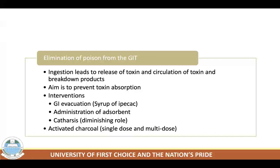Substances not well absorbed by activated charcoal include alcohols (ethanol, isopropyl alcohol, methanol, glycol, acetone), hydrocarbons (petroleum distillates, kerosene), metals and inorganic minerals (arsenic, boric acid, iron, lead, sodium), and corrosive substances (sodium hydroxide, sulfuric or nitric acid). Other adsorbents include cholestyramine, sodium polystyrene sulfonate, bentonite, starch, and potassium ferricyanide. Cathartics have a declining role in management.